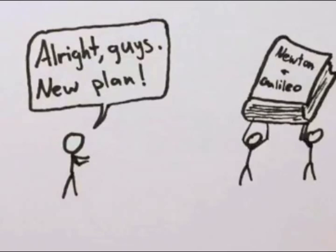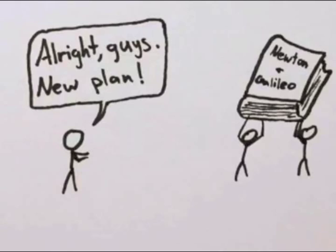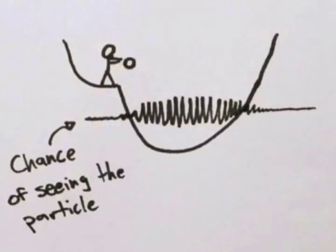Chances are, when you release the particle into a valley, next time you see it, it will still be somewhere in that valley. However, the particle would really like to be on the other side where the slope is.